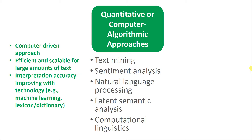The accuracy could be one of the challenges here — interpreting the tone, the context, and what unit of analysis or idea you're going to try to interpret. Because it's computer driven, that means it's often efficient and scalable for large amounts of text, particularly when we think about text that's arriving to us very quickly. The interpretation accuracy tends to be improving as technology gets better, as our algorithms get better, and as we better train our models, especially when you consider the machine learning approaches.